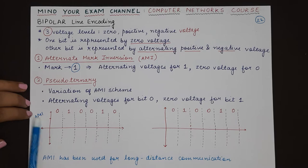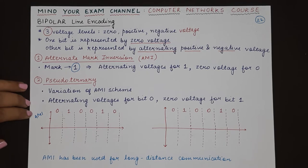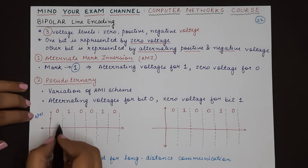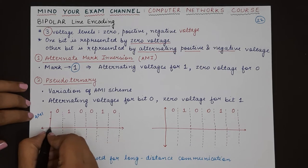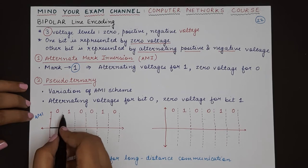0, 0, 1, 0 in AMI. In AMI, zero is represented as voltage zero. So zero will be represented as zero, then one will be represented as positive voltage first.